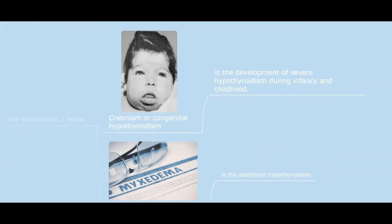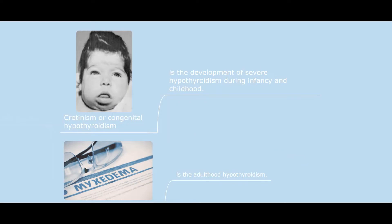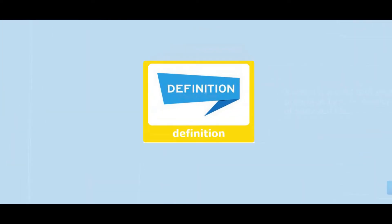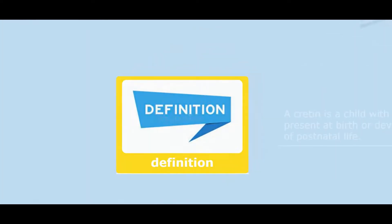Clinical manifestations depending upon the age at onset of disorder are divided into two forms. One: cretinism, or congenital hypothyroidism, is the development of severe hypothyroidism during infancy and childhood. Two: myxedema is the adulthood form of hypothyroidism.